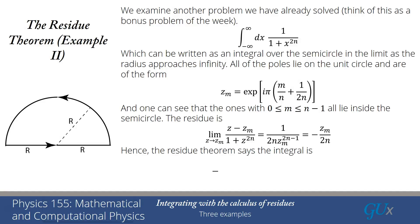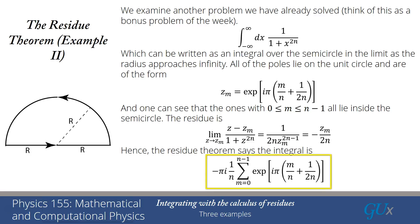The residue theorem tells us the integral is 2πi times the sum of those residues. With the minus sign and factor 1/(2n), it becomes −πi/n times the sum from m = 0 to n−1 of zₘ. Here zₘ = exp(iπ(m/n + 1/(2n))). We can factor out exp(iπ/(2n)) as a constant. Letting y = exp(iπ/n), this becomes a finite geometric series. Multiplying by (1 − y) allows us to sum the series, just as we did in the geometric series proof earlier in the course.